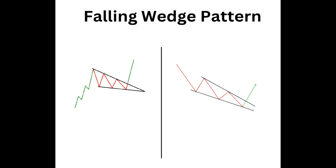The buyers will return to the market and drive up the price after this period. When the falling wedge forms a downtrend, as shown on the right, a reversal is likely to occur next. The price will break out in the opposite direction, as shown in the image. This indicates that buyers outweigh the sellers to increase the price upwards. When we code the falling wedge pattern, we need the slopes to be negative and converging.